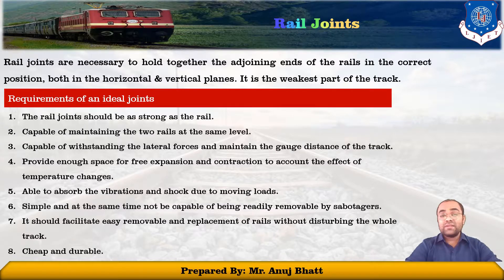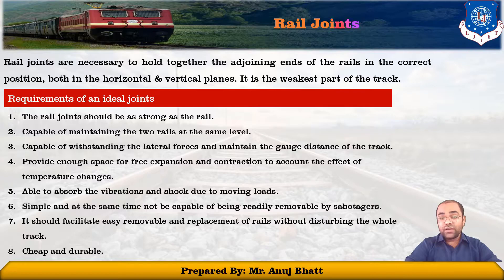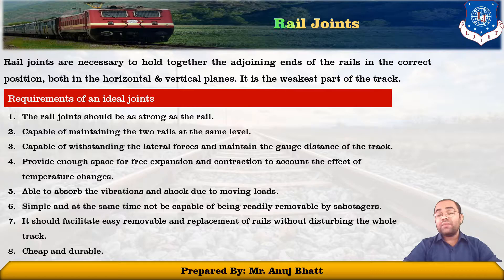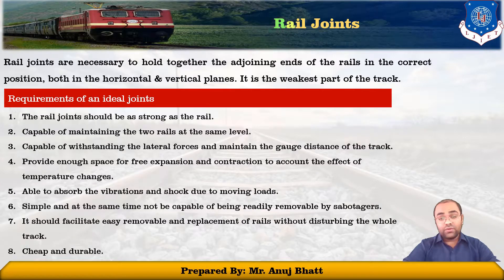Using the maximum number of joints will bring disadvantages: rail joints form the weakest part of the track. More number of joints means there will be more chance of buckling of track or deformation of the track. With that also, it creates more wear and tear to the rails. It also increases the maintenance cost and leads to the maximum use of fastenings and fixtures. If the gap between those two rails is more, it will be uncomfortable to the passengers during the journey.